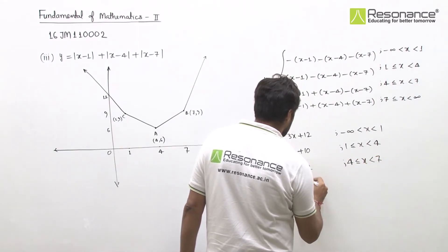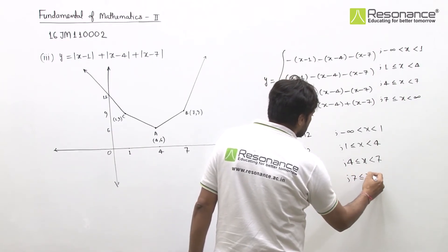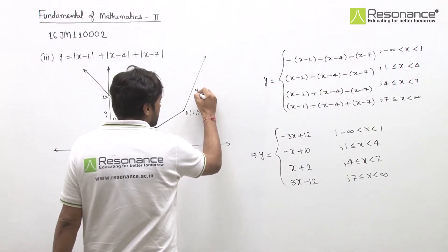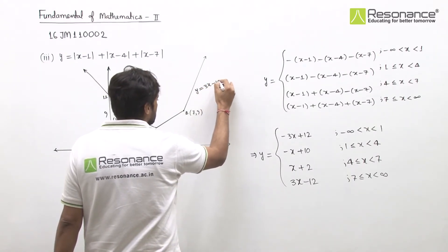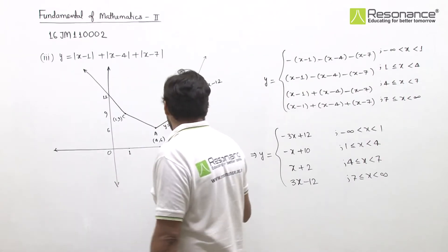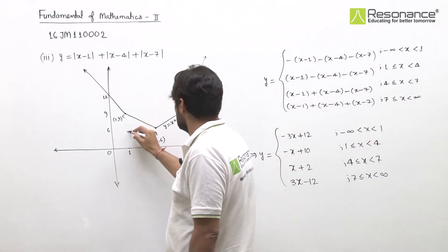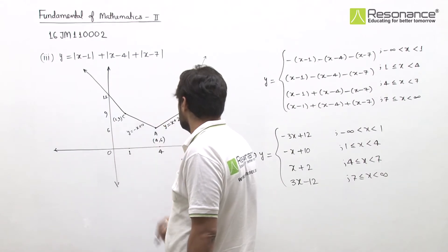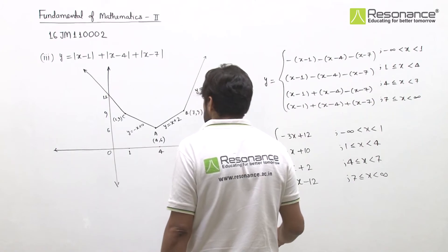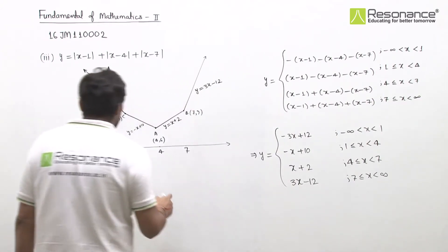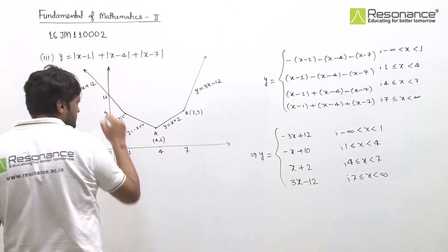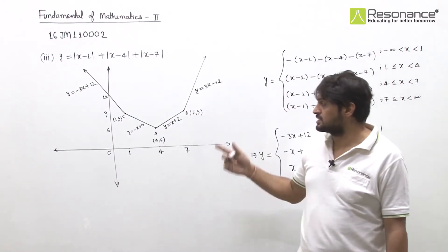Summarizing: for x from 7 to infinity, y = 3x minus 12; for x from 4 to 7, y = x plus 2; for x from 1 to 4, y = minus x plus 10; for x less than 1, y = minus 3x plus 12. This is the labeled graph of the third part.